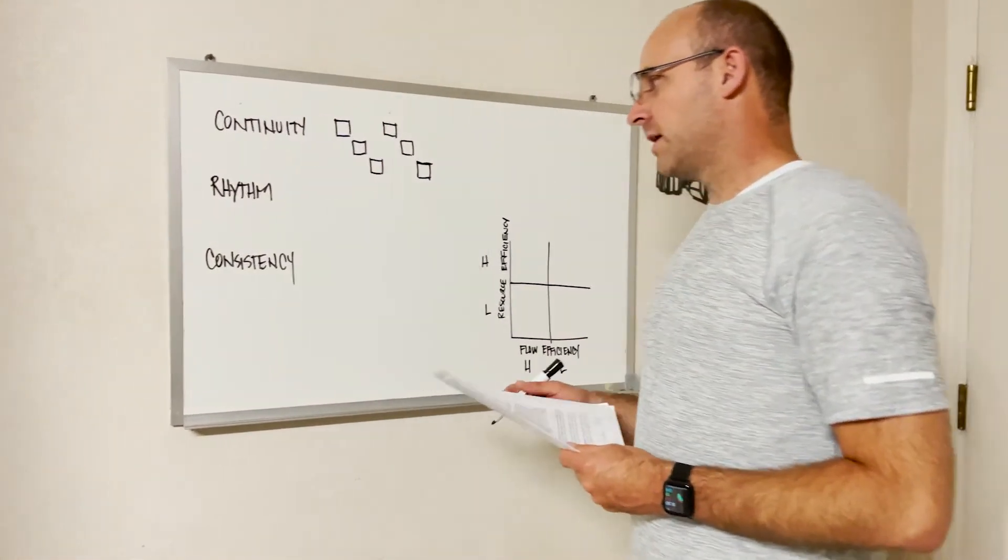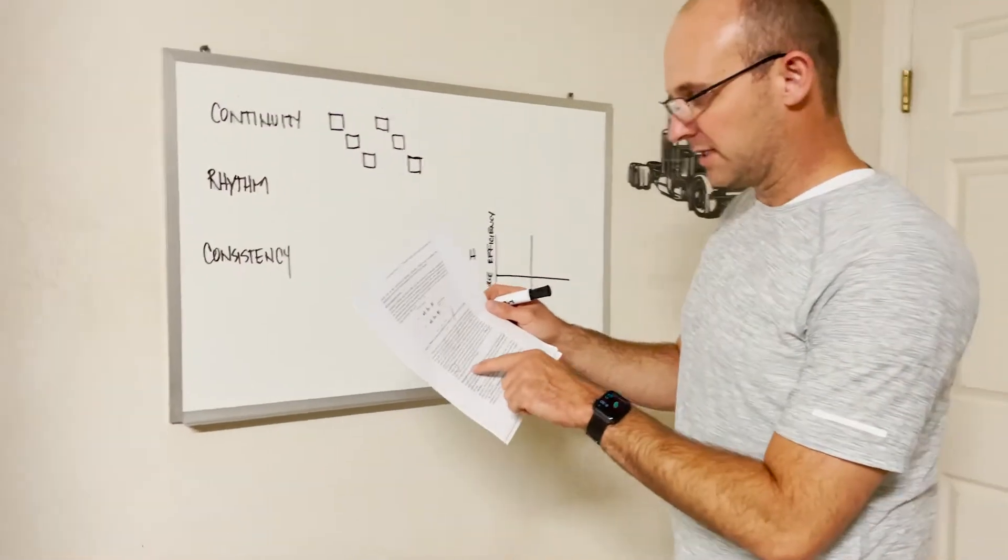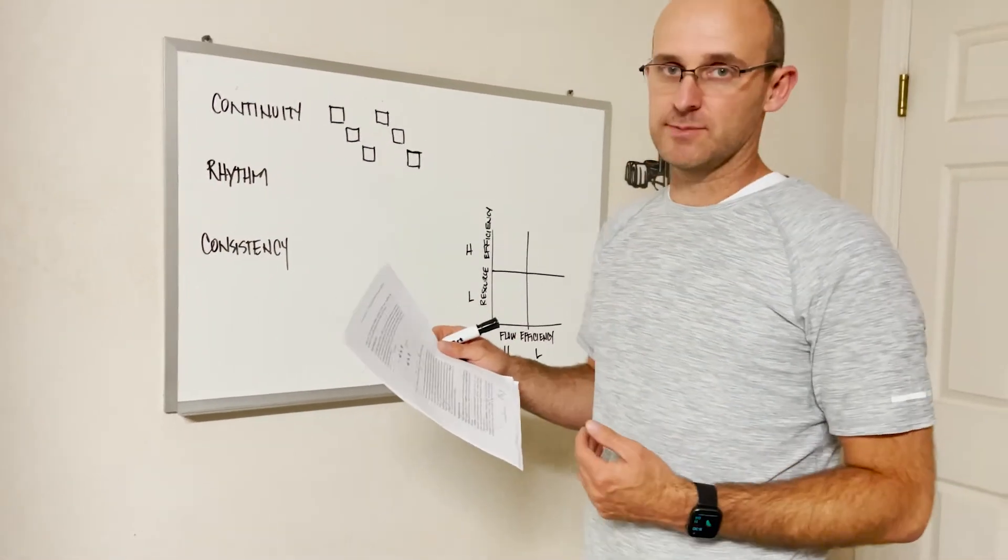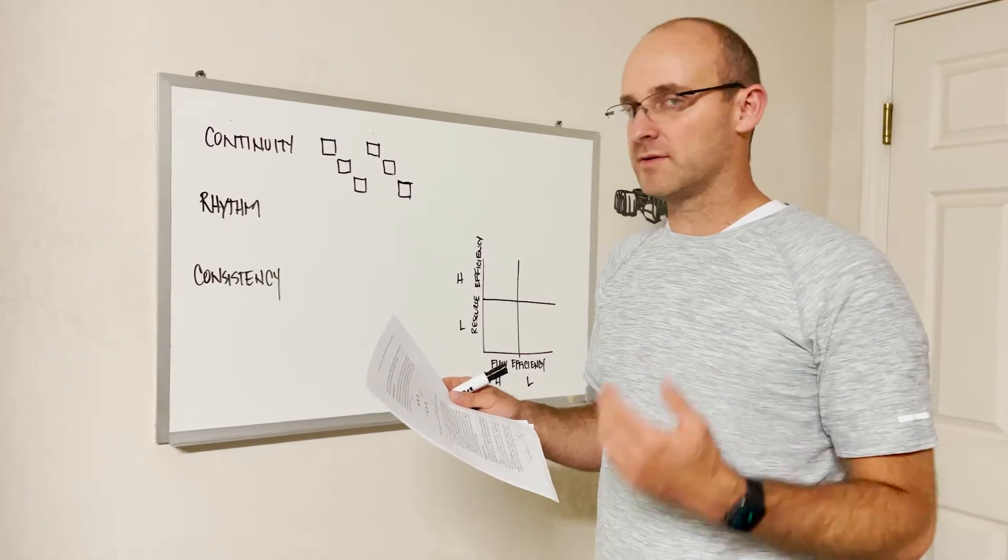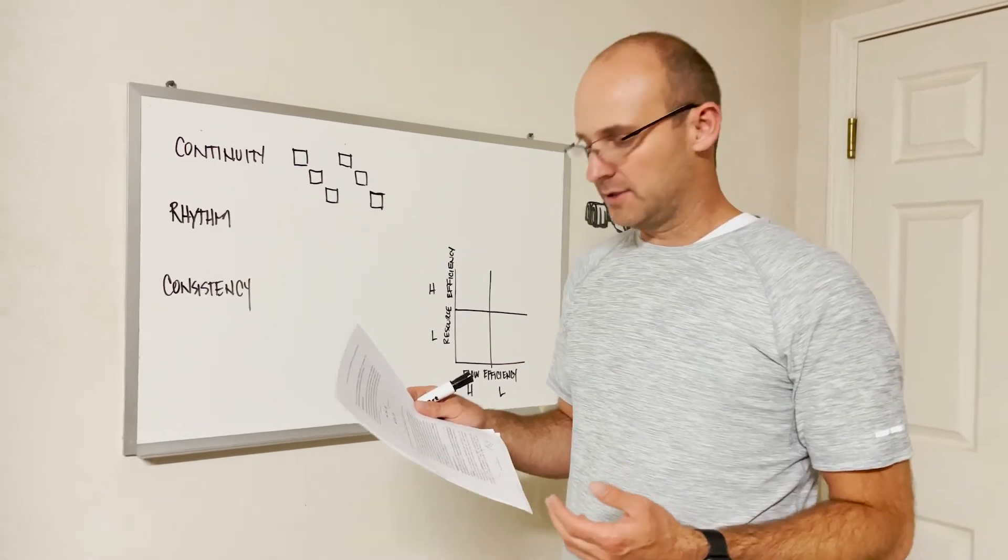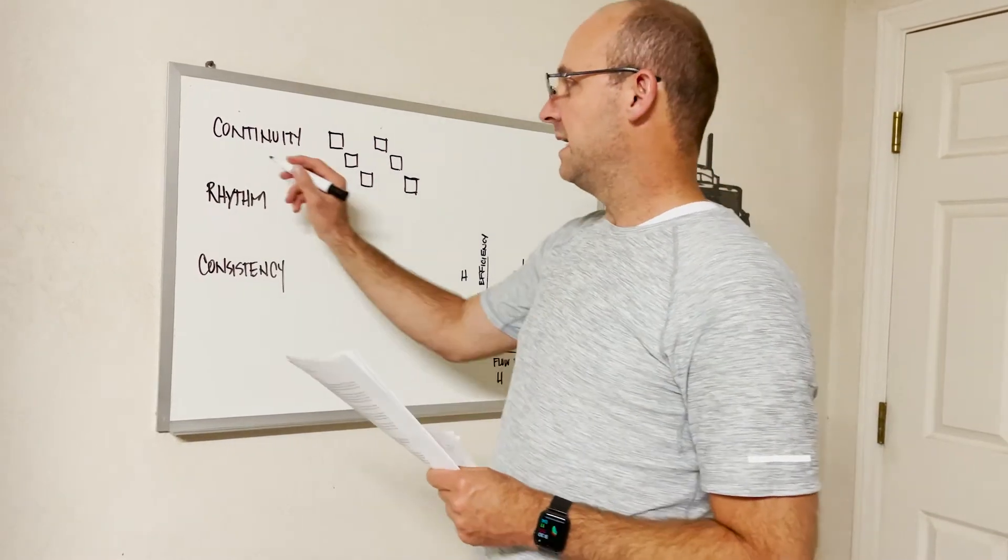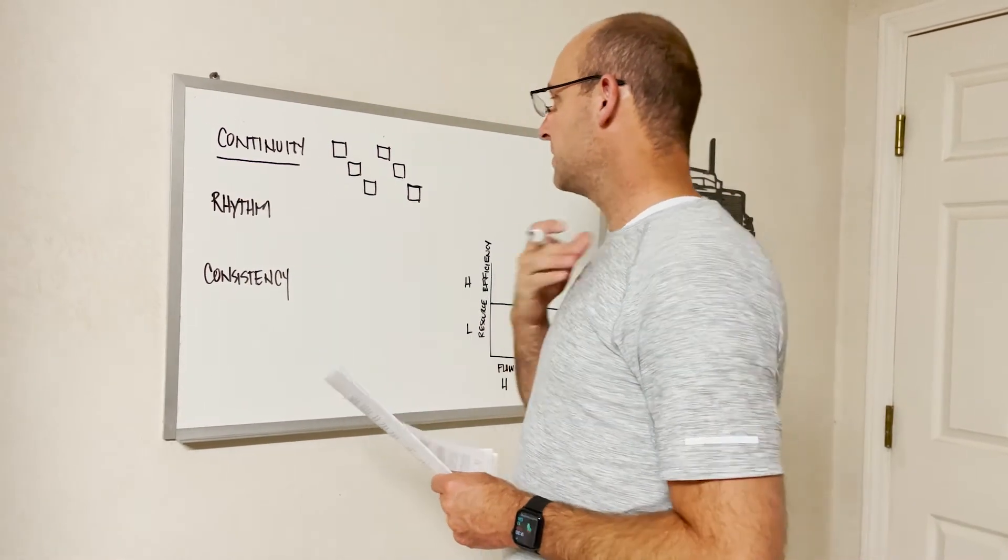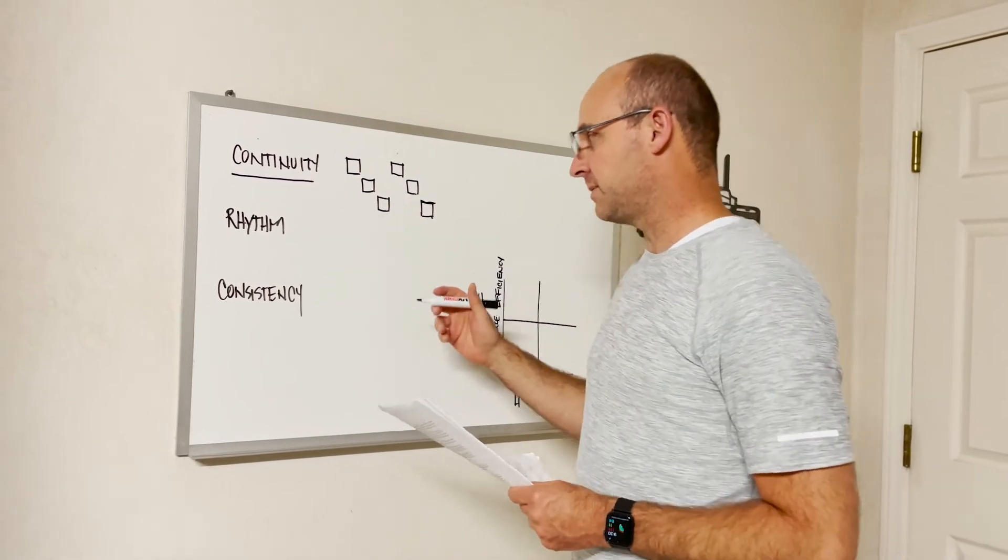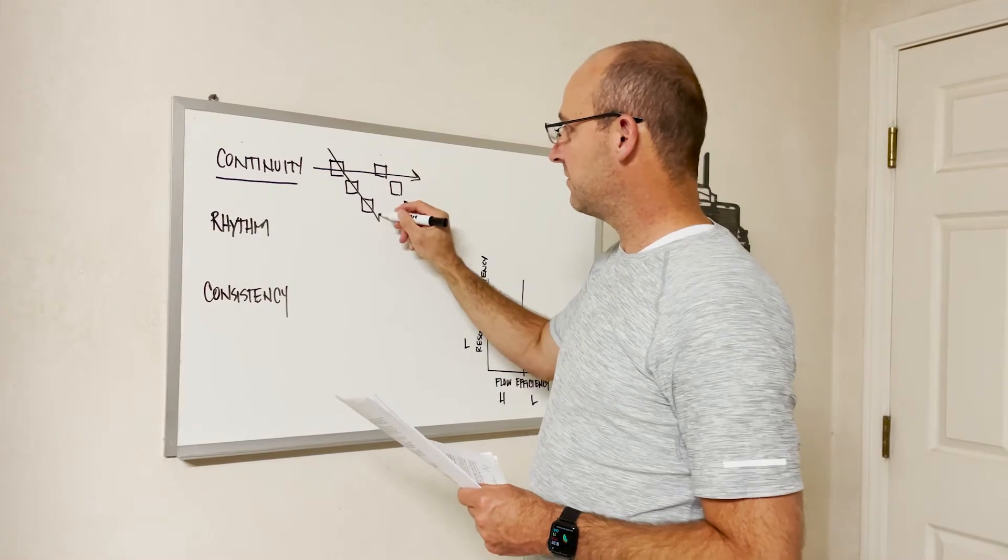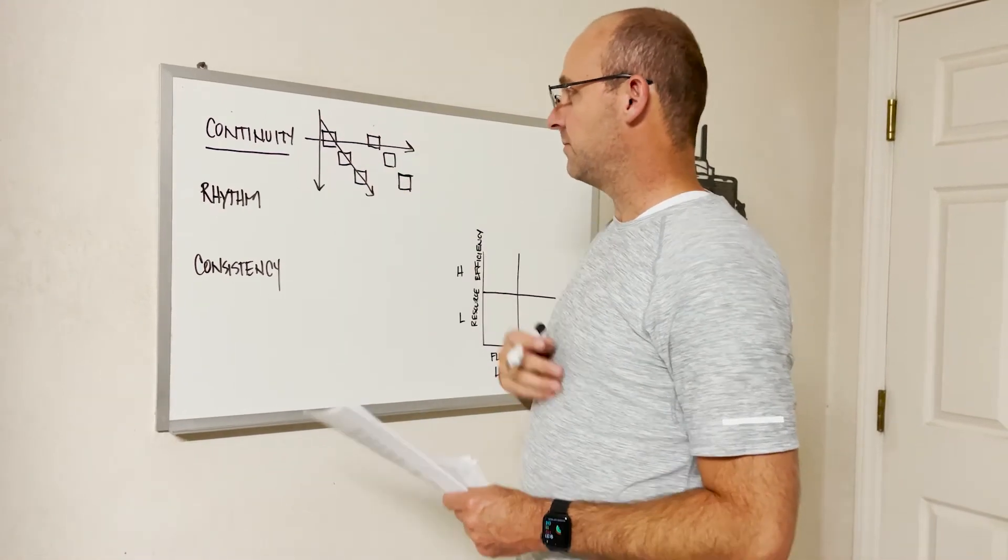So there was a really neat part in here that said properties of flow. And so I researched these as a part of the tact planning book and all of the trainings that we do. And there's three key things that are key for flow. One is continuity. So we talked about how in a tact plan you can see workflow, trade flow, and logistical flow.